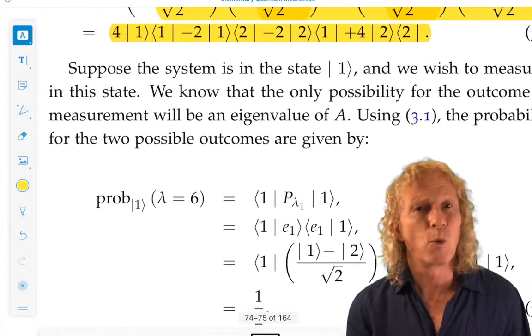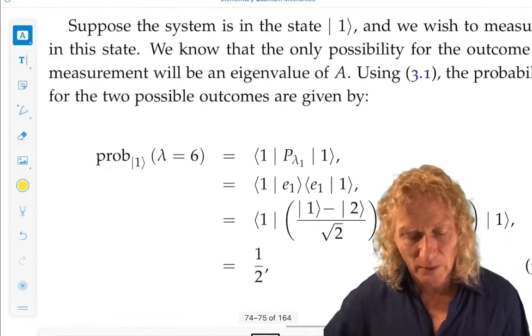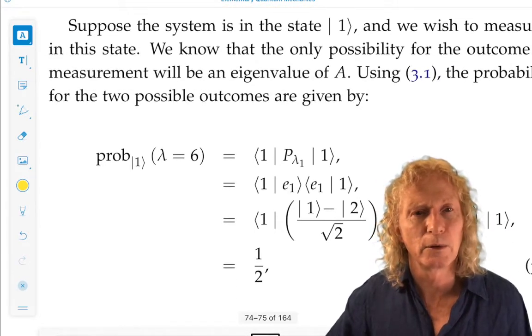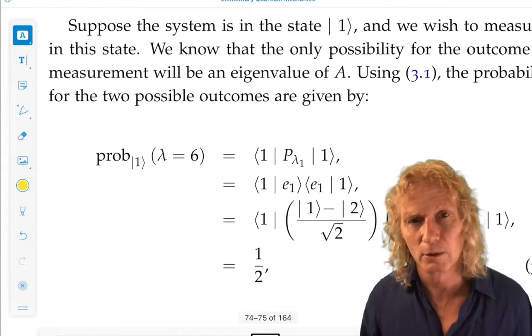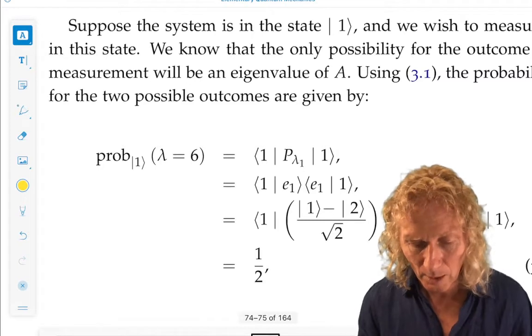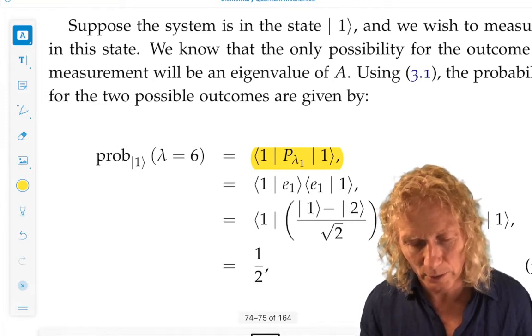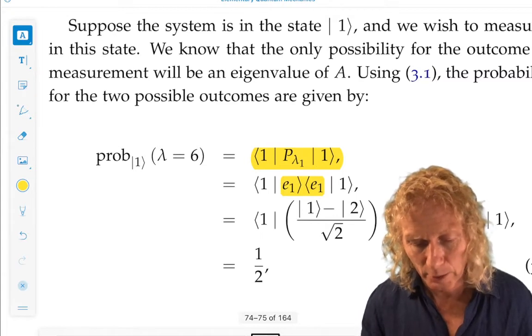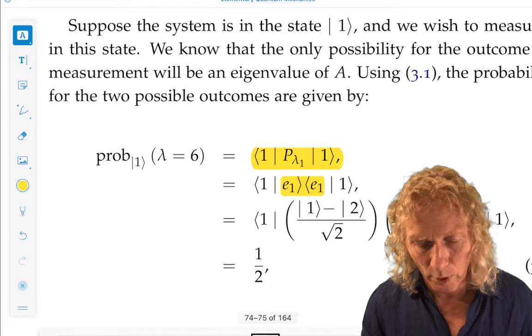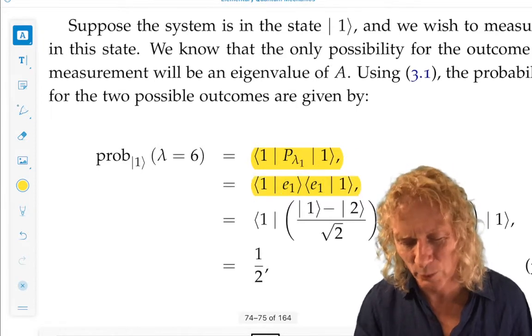Suppose the system is in the state ket 1, not an eigenstate. That's the difference with the previous example. What is the probability of measuring λ = 6 in the state 1? We know if we make a measurement in a given state, it's going to be an eigenvalue. That state doesn't have to be an eigenstate. Well, it's this expression right here. So, the orthogonal projection operator onto the eigenspace corresponding to λ₁ is given by this ket-bra combination. Now, we see the issue. How do you compute the bracket of bra 1 with ket 1 and bra E1 with ket 1?